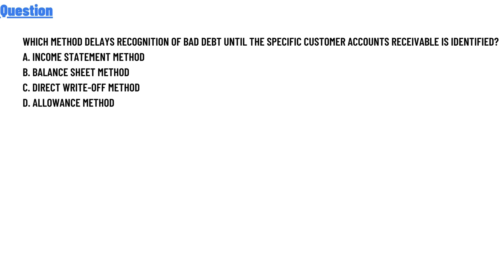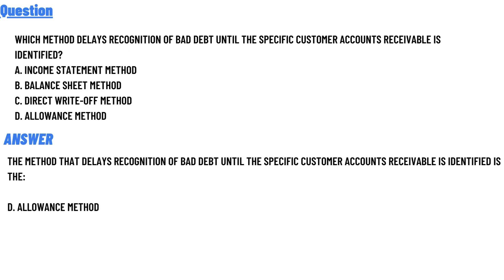The correct answer is option D — the allowance method — is the method that delays recognition of bad debts until the specific customer accounts receivable is identified.